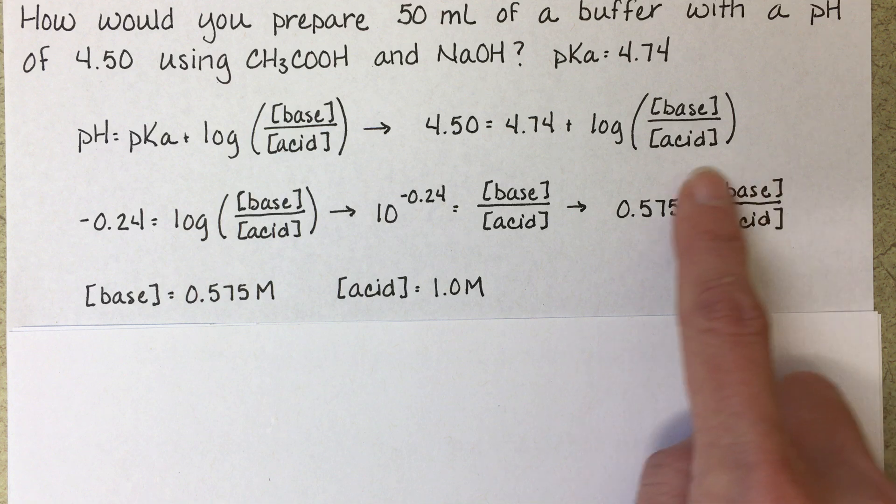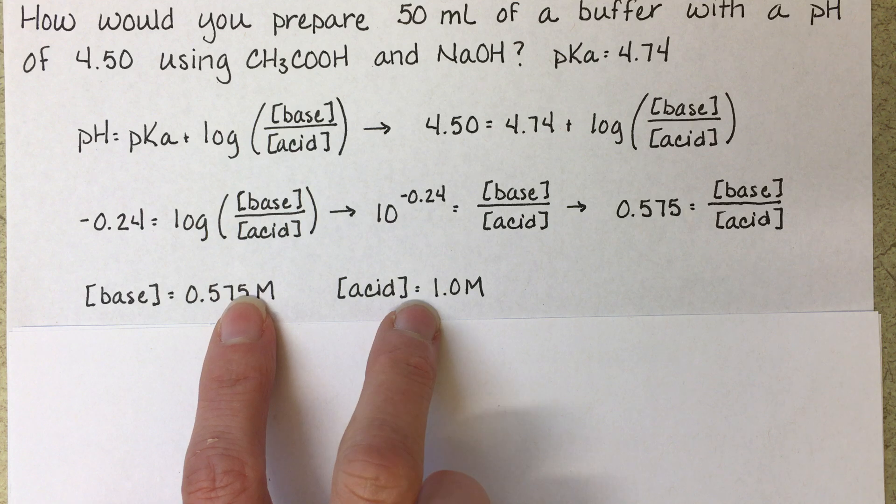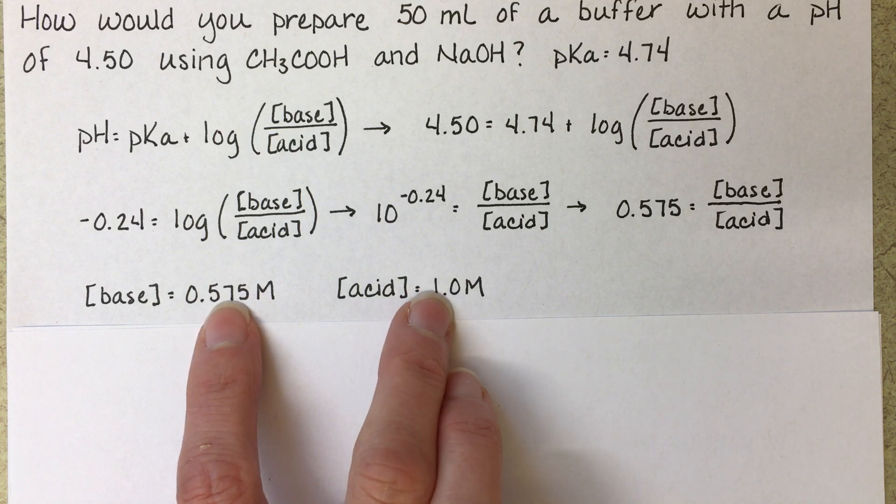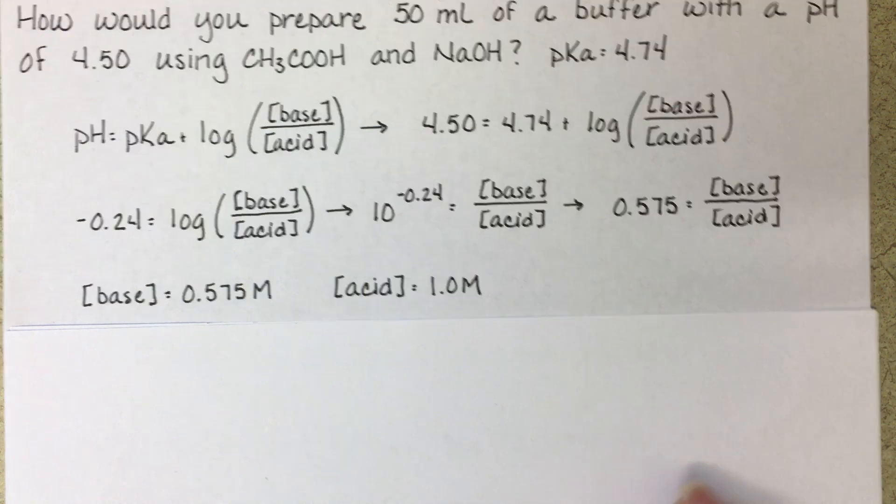There's a lot of different concentrations that you can use here for base and acid. There's a lot of different things you could choose here for these desired concentrations, but the ratio needs to work out to be 0.575.